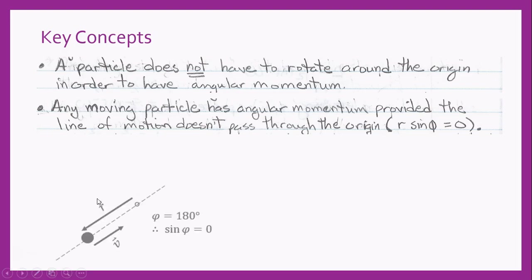Let's take a look at this visually. Here we have our particle on its line of motion, which passes through the origin. Notice that the position vector and the velocity vector are parallel to each other at an angle of 180 degrees, and of course the sine of 180 degrees is going to be equal to zero. So there's no angular momentum.